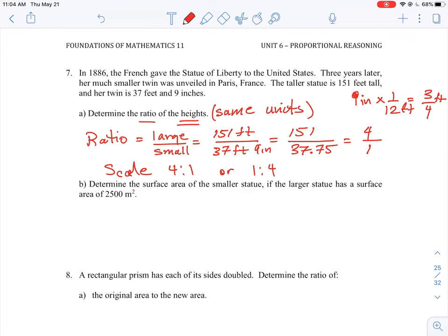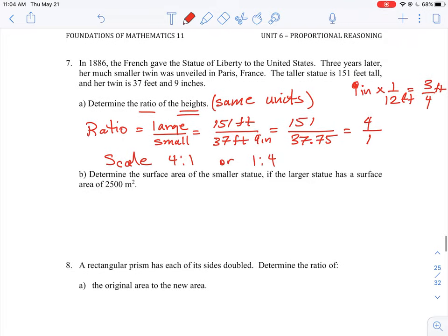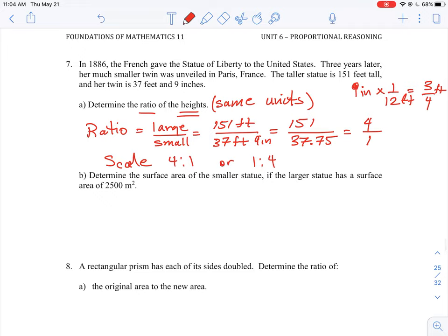Then the second part of this question in part b is asking you to determine the surface area of the statue if the larger statue has a surface area of 2,500 square meters. They've converted the unit again, which really isn't going to make much of a difference, but they're asking you to find surface area.